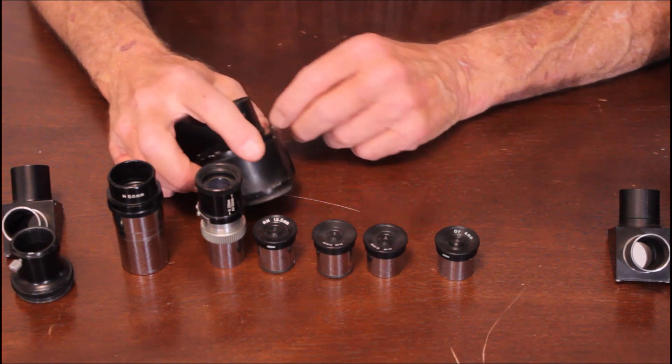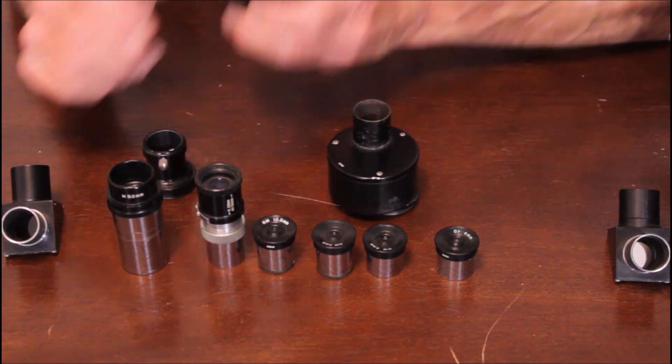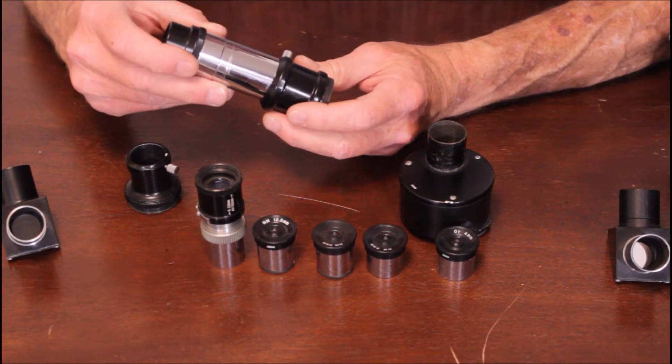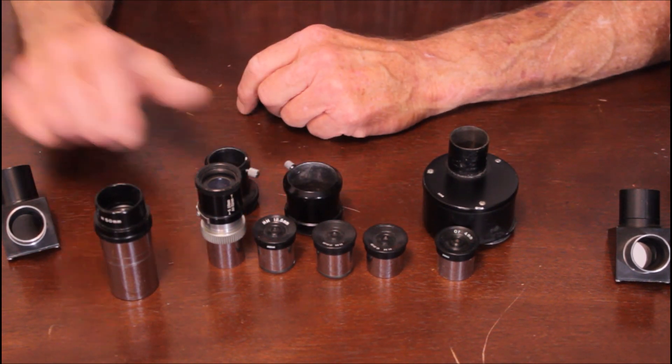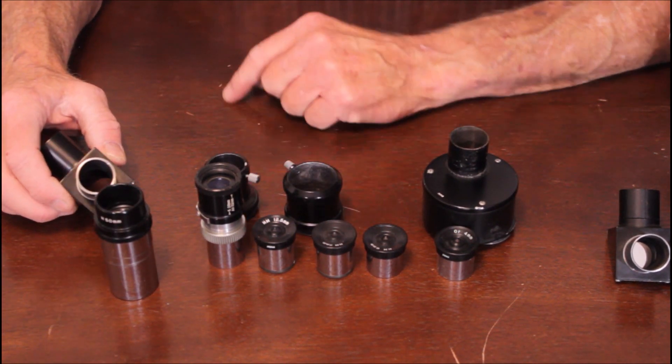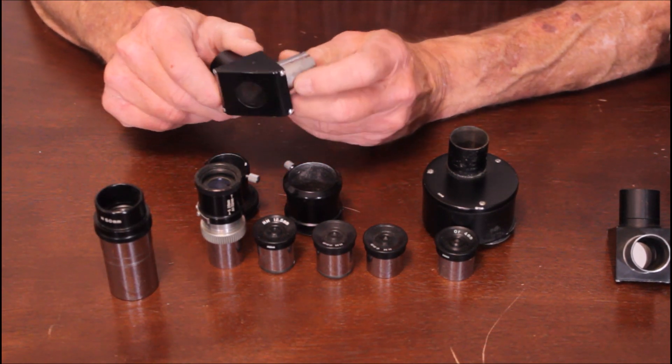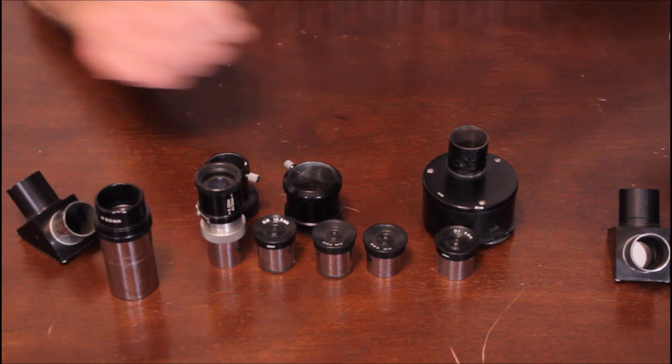This is your Porro prism, 965 format. There's your adapter. This is nice to have an adapter for inch and a quarter format, so that's very nice because then you can use this scope with inch and a quarter eyepieces. Look at what this is. This is a Herschel wedge and you can use this for solar observation in addition to this solar projection device.